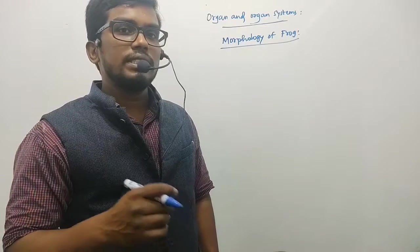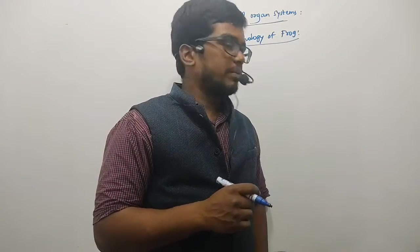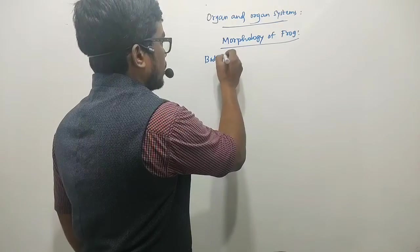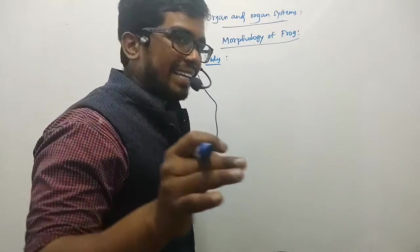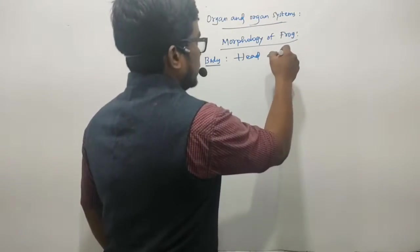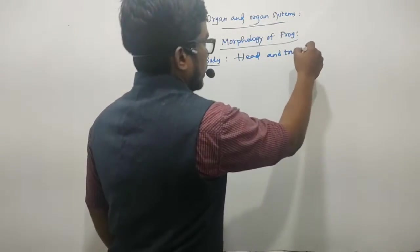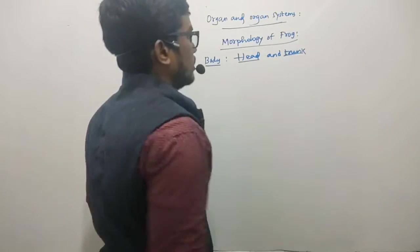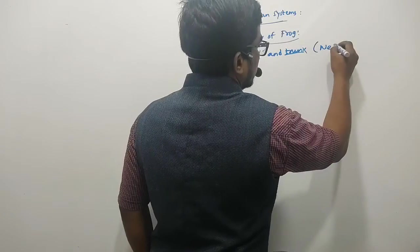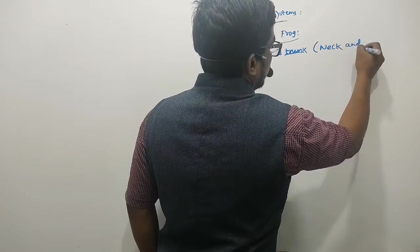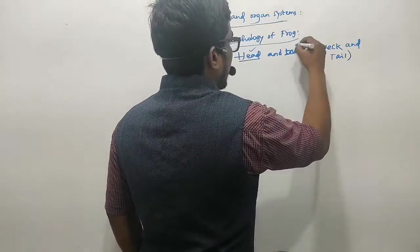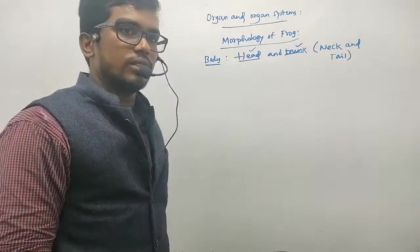The body of the frog is divided into head and trunk, and most importantly, the neck and the tail are absent. Note this point — neck and tail we do not find with respect to frog; only two parts can be found: the head and the trunk.